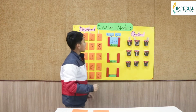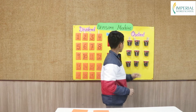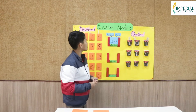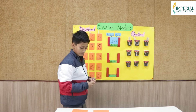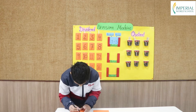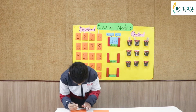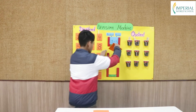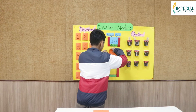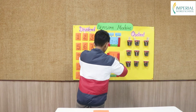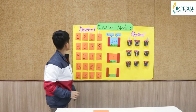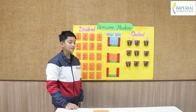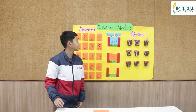So I used 3 quotient pouches, so the quotient will be 3. And the remainder will be 4 because only 4 popsicle sticks are left in the dividend pouches.